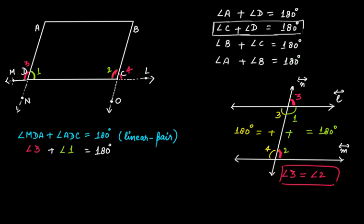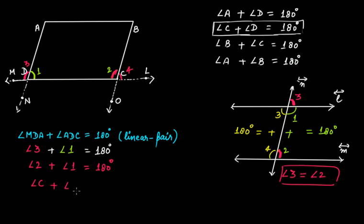Since angle 3 equals angle 2, we can substitute into our earlier equation: angle 2 plus angle 1 equals 180 degrees. Here angle 2 represents angle C and angle 1 represents angle D, so angle C plus angle D equals 180 degrees — hence proved.